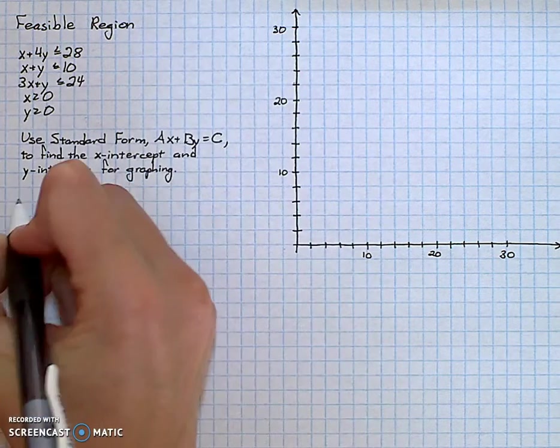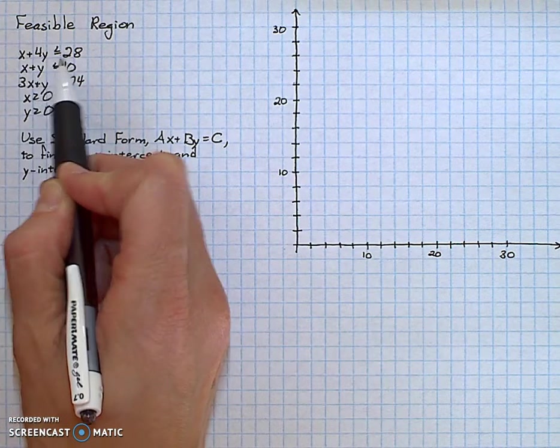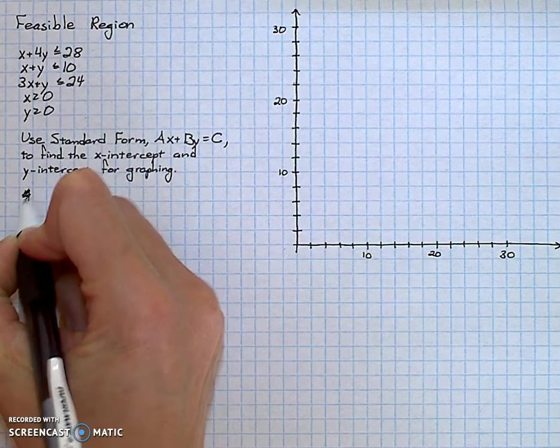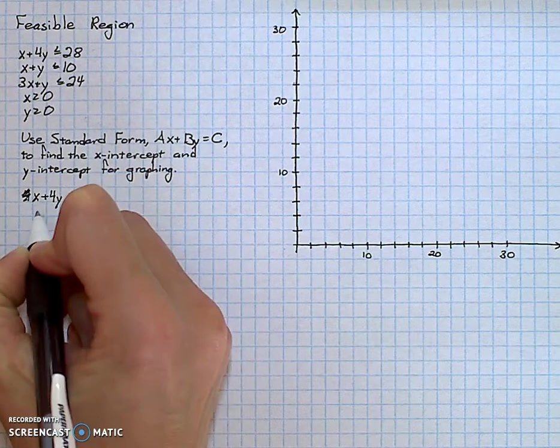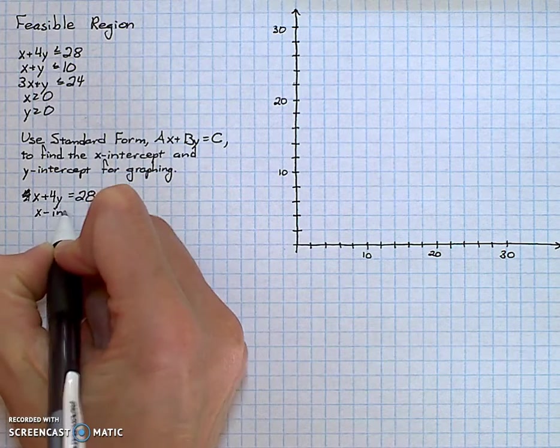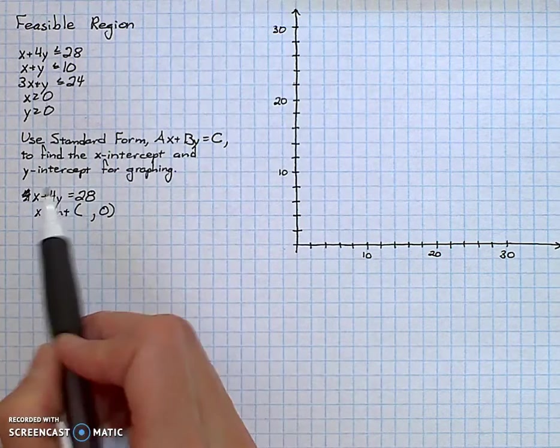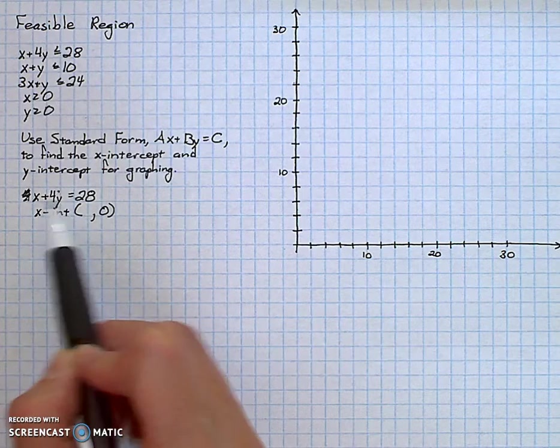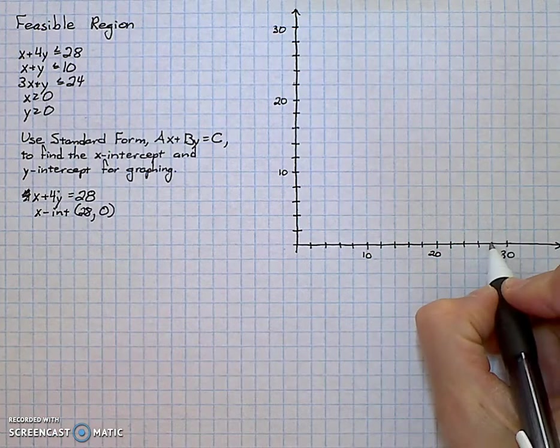To begin with, I will take the inequality x plus 4y is less than or equal to 28 and change it to an equation. I'll find the x-intercept by letting the y-value equal 0. If I replace the y with 0, I get x equals 28. The x-intercept is at 28.